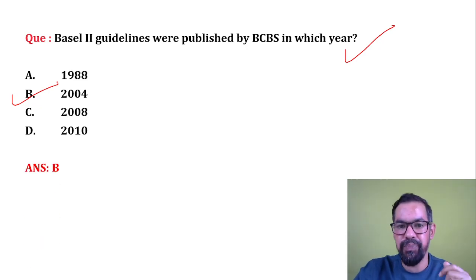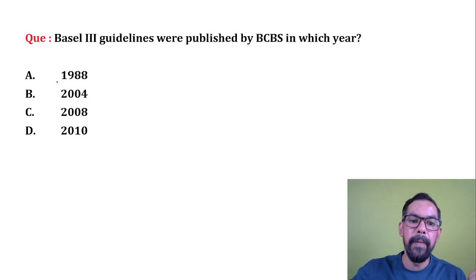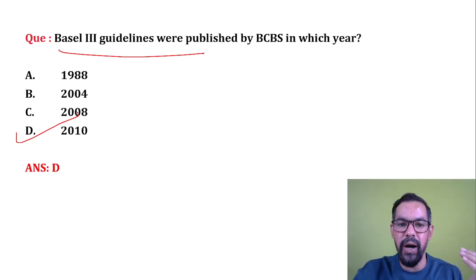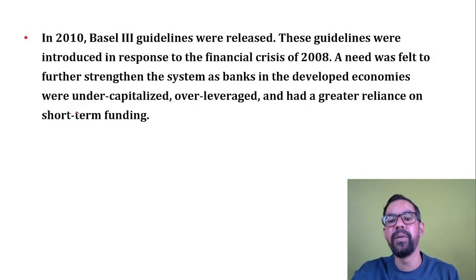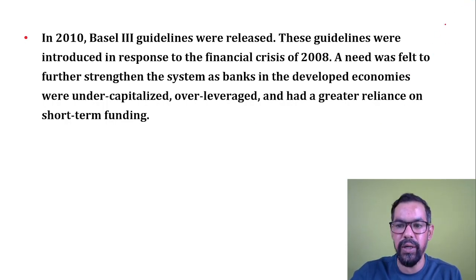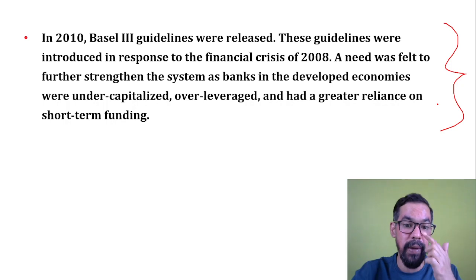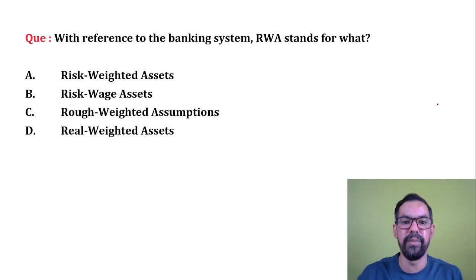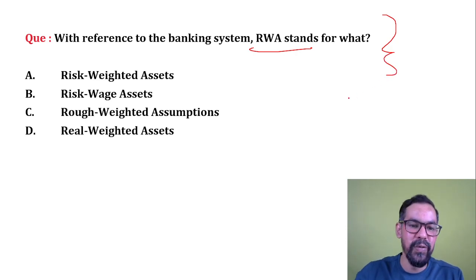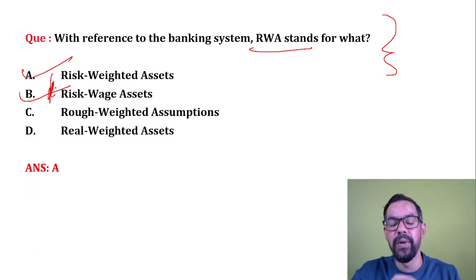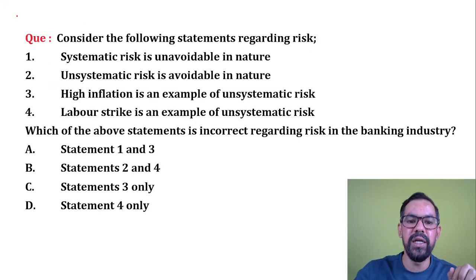Next question: Basel 2 guidelines were published by BCBS in which year? The correct answer is 2004 — option B. Next question: Basel 3 guidelines were published by BCBS in which year? The correct answer is 2010. Basel 3, the most recent one, came after the 2008 global recession and the failure of Lehman Brothers Bank. India is currently implementing Basel 3 guidelines. With reference to the banking system, RWA stands for risk-weighted assets — option one is the correct answer.